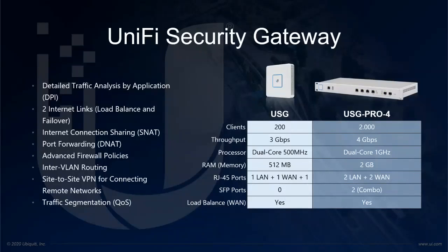Unify also does have a security gateway, which is our router and can also be used to manage security and firewall settings. As you can see, there are a range of functionalities including DPI or deep packet inspection, load balancing, and other advanced firewall policies, and also a VPN functionality to establish remote networks when you're working from home or trying to extend your office's corporate enterprise network. Within the USG range, we have the USG and the USG Pro 4. Depending on the size of your network, you could opt for either of these for routing and firewall policies.